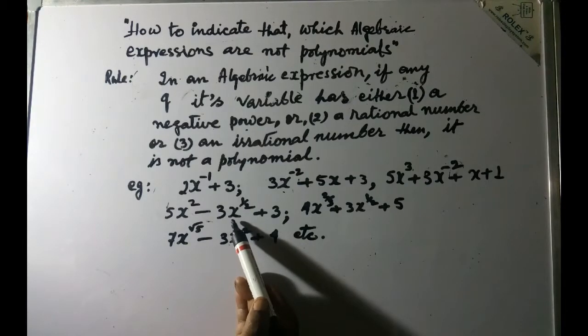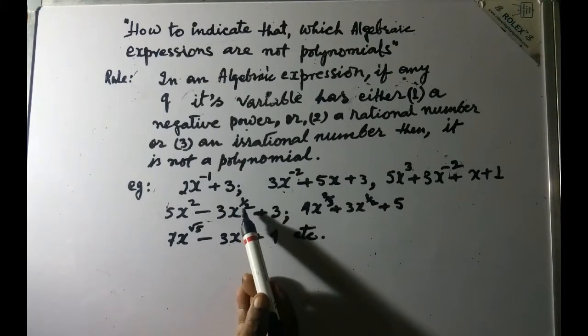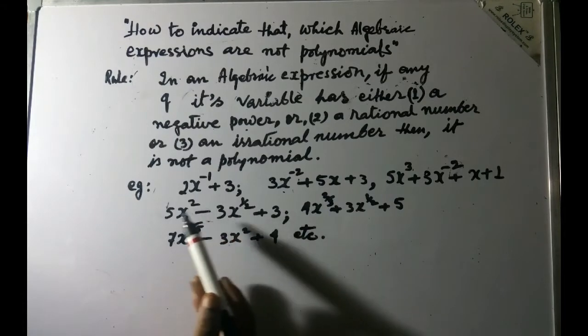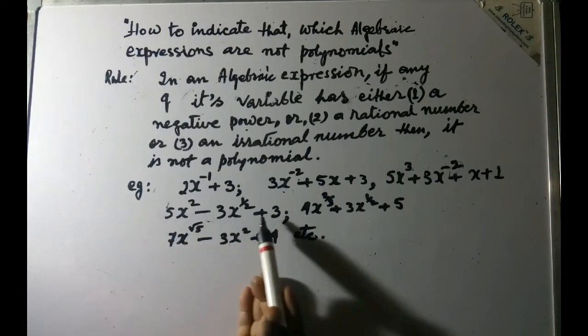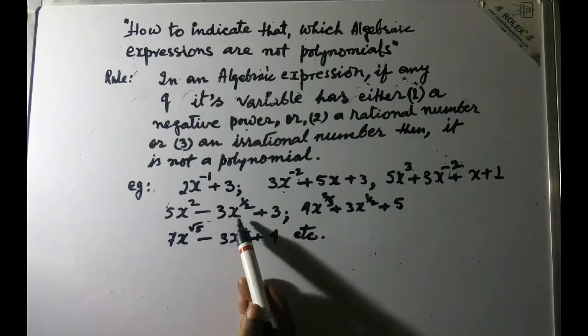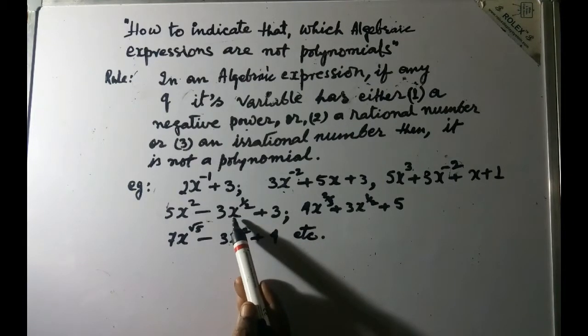Then we have the second examples here. What do we see? This variable here in the second term we have the power as 1 by 2, so 1 by 2 is a rational number, so again we say that this is not a polynomial.